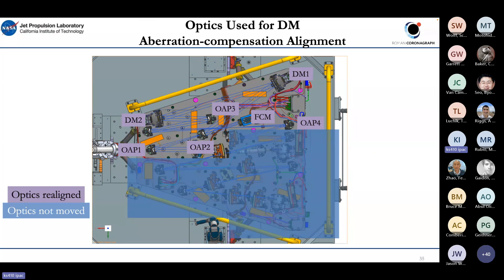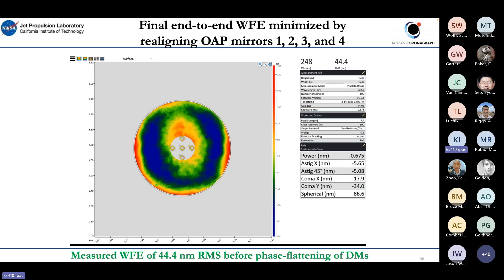To compensate for DM native aberrations due to moisture and recover margin, OAP mirrors were moved and the line of sight was accommodated with the FCM and static fold mirrors. Not just one OAP mirror pair but two were moved to add back-end aberration and accommodate the DM native aberrations. The final end-to-end wavefront error was brought down to 44 nanometers RMS. The requirement is complicated — there is a front-end and back-end requirement, and this is an end-to-end measurement requiring deconvolution. This was before any phase flattening of the DMs was performed.